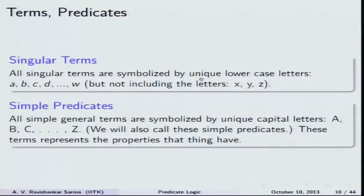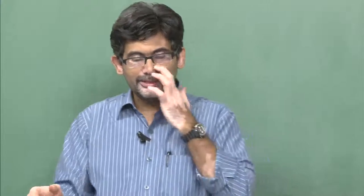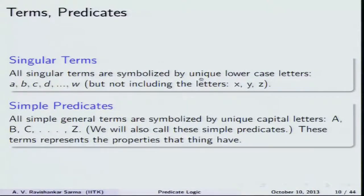Singular terms are usually represented by unique individual constants like a, b, c, d, etc., while x, y, z are used for variables. If you are sure the person is Ravi or Raju or Ramesh, you represent them as a, b, c, etc. If you want to represent an unknown human being, you use variables x, y, z. We are now talking about the basic building blocks of predicate logic. Predicate logic can in a certain sense be viewed as a study of quantifiers: for all x and there exists some x.